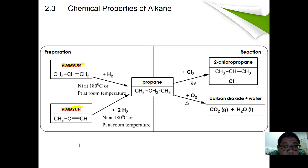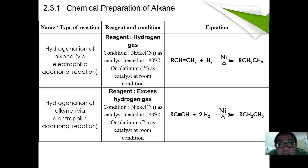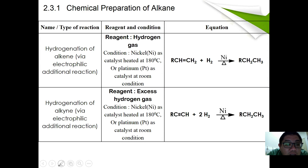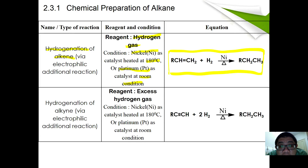For the chemical reaction part, there are two chemical reactions shown: it reacts with chlorine under UV light, which is halogenation, and it reacts with oxygen under heating to form carbon dioxide and water, which is called combustion. Alkanes can be prepared via hydrogenation of alkenes — this is a type of electrophilic addition reaction. The reagent used is hydrogen gas catalyzed by nickel heated at 180°C, or platinum at room temperature. Alkyne can also behave in the same way using the same hydrogen gas and same catalyst.